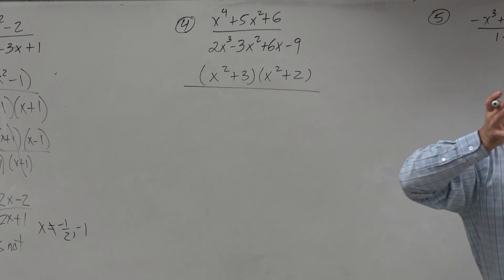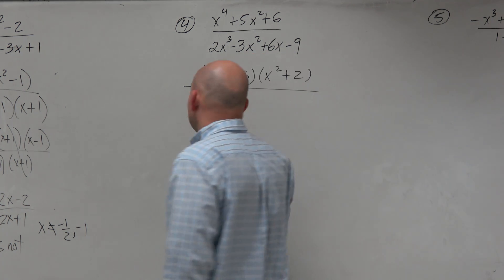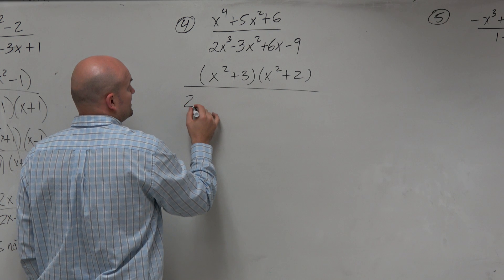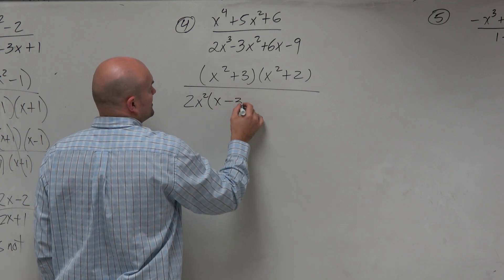And then here, I say, oh, there's four terms. So I should probably do factor by grouping to make two binomials.